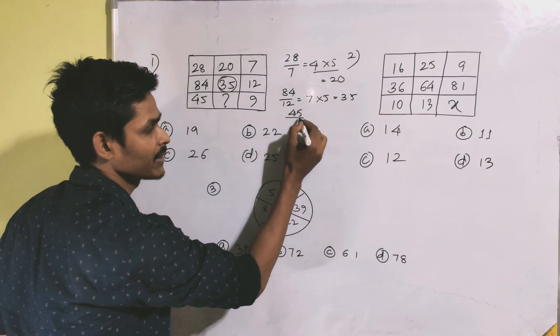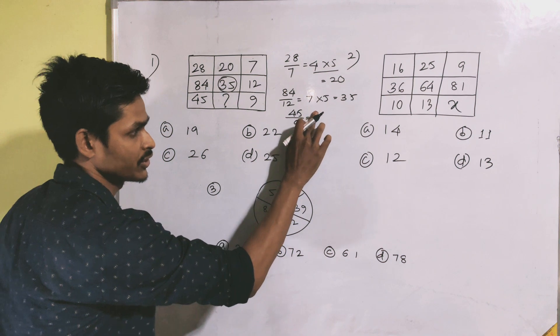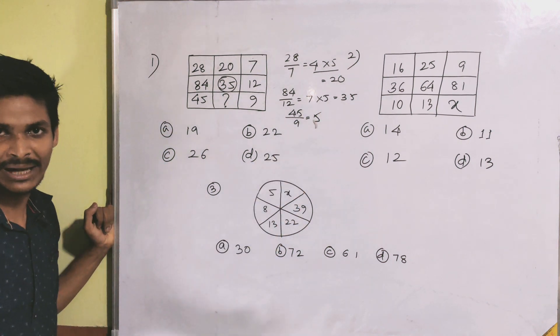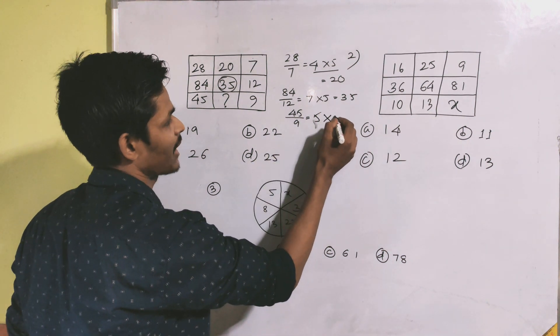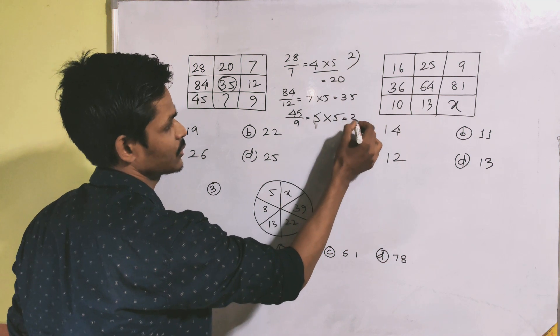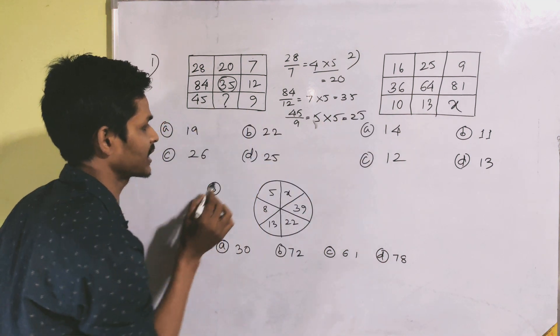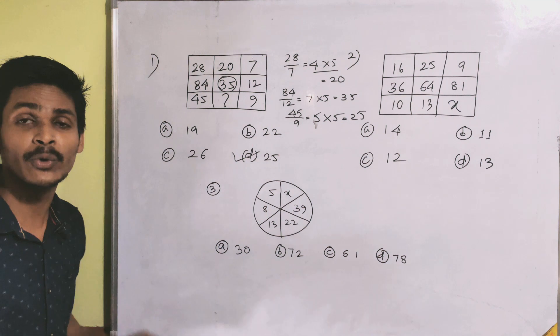45 divided by 9 gives 5, and 5 times 2 gives the result. The answer for the question mark is 25.